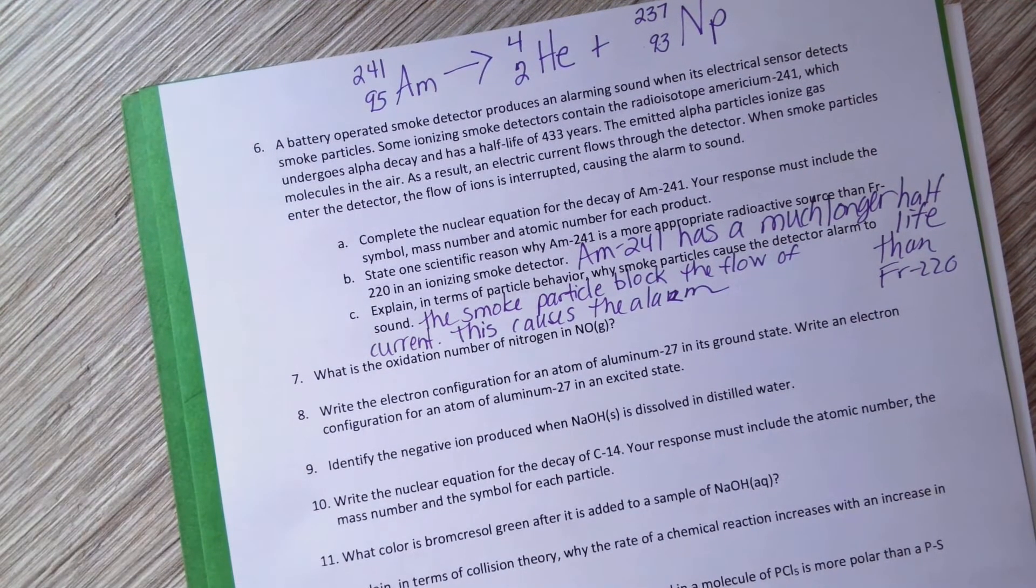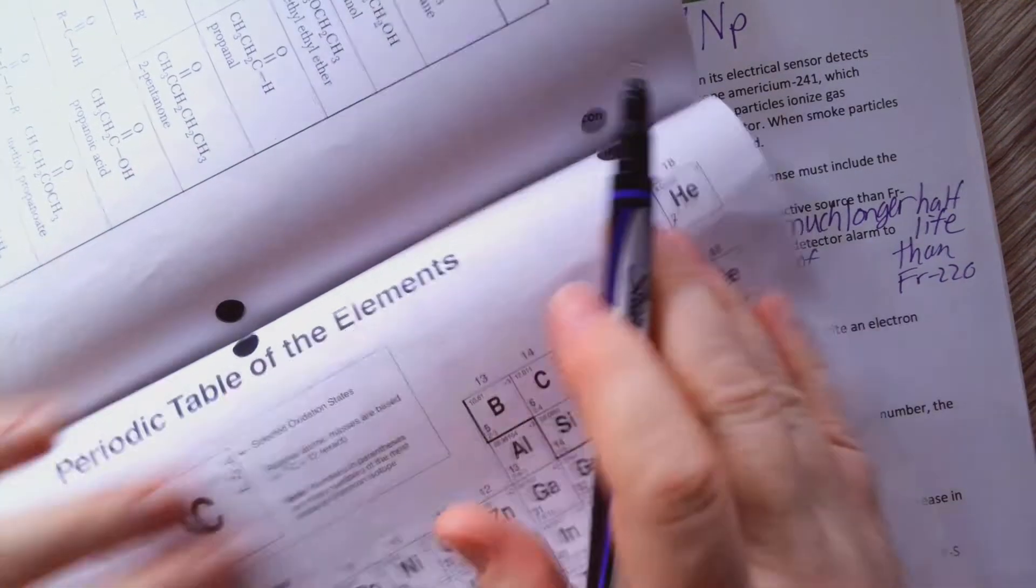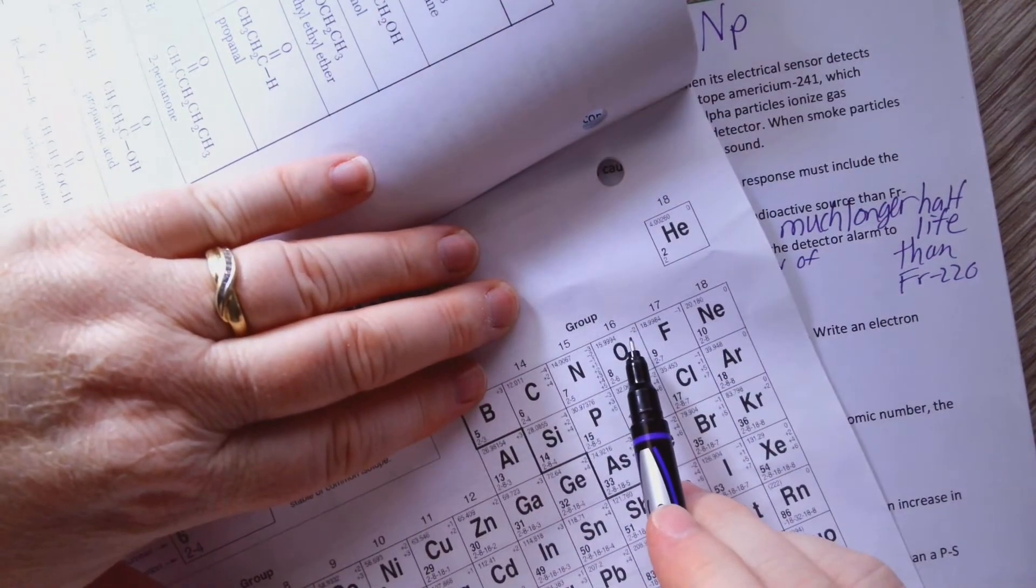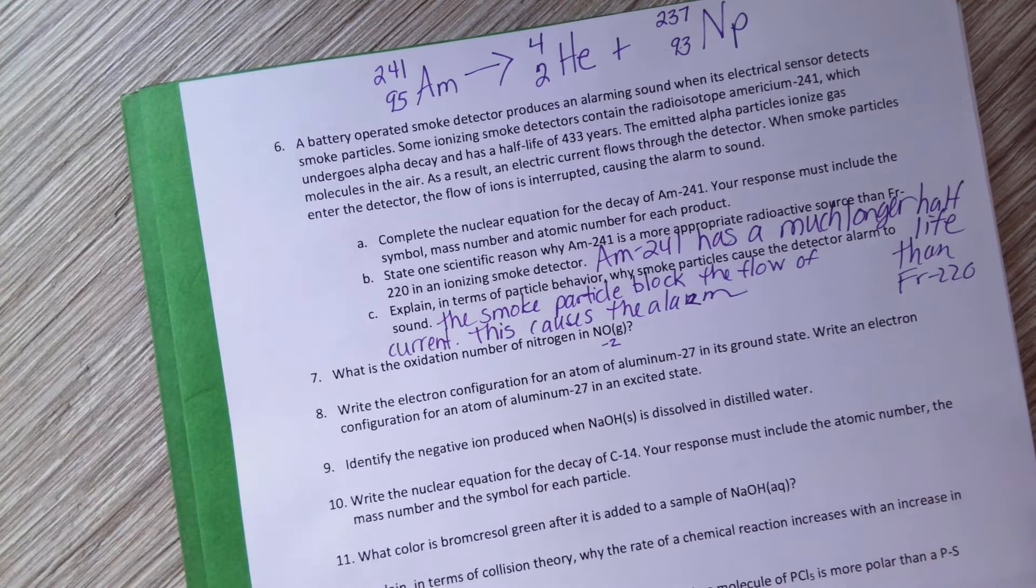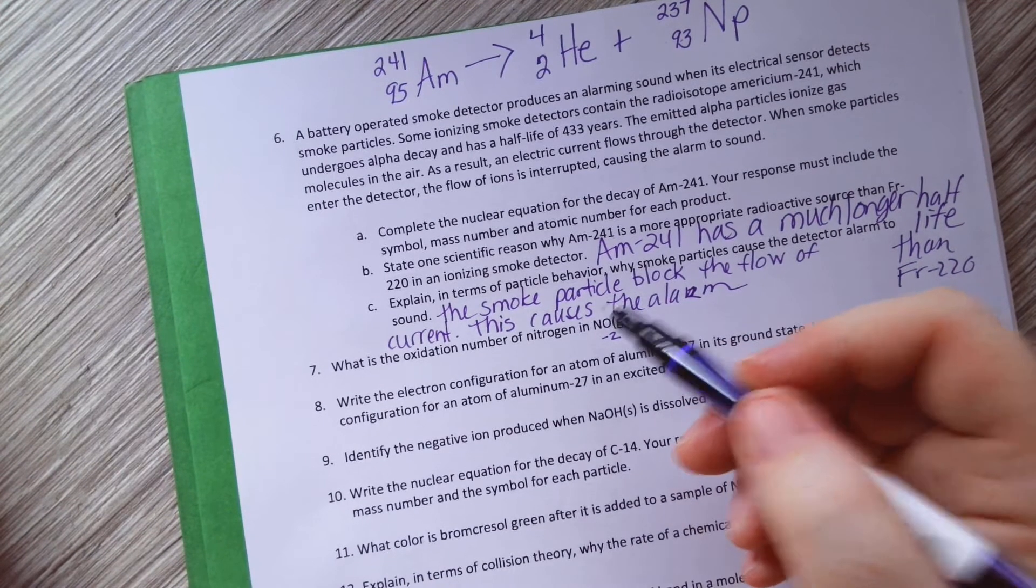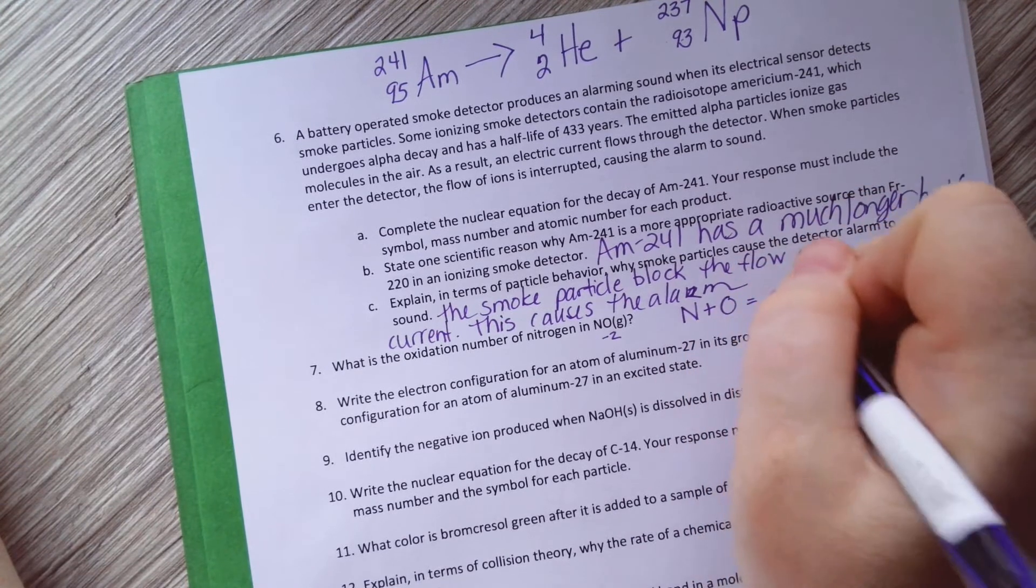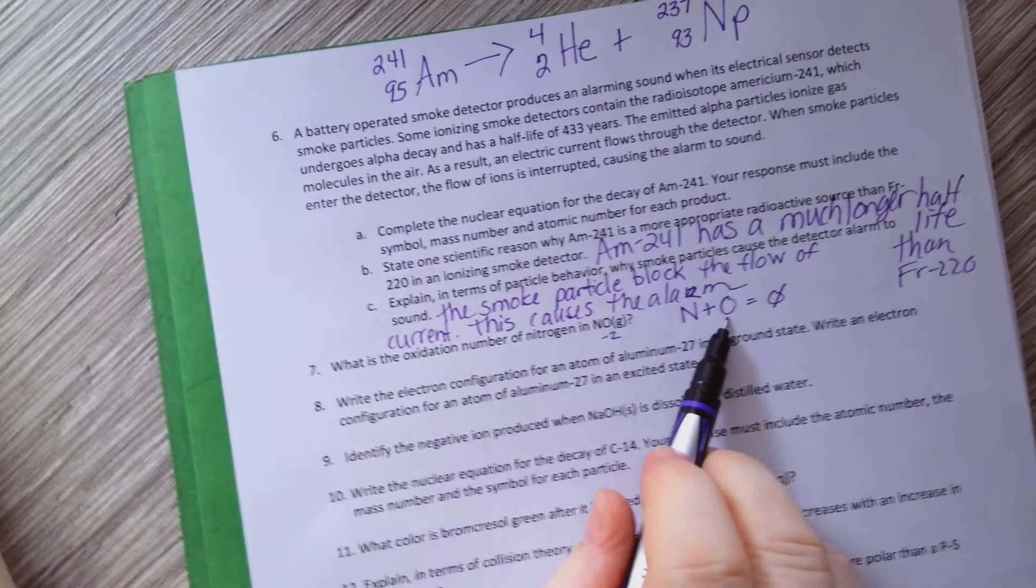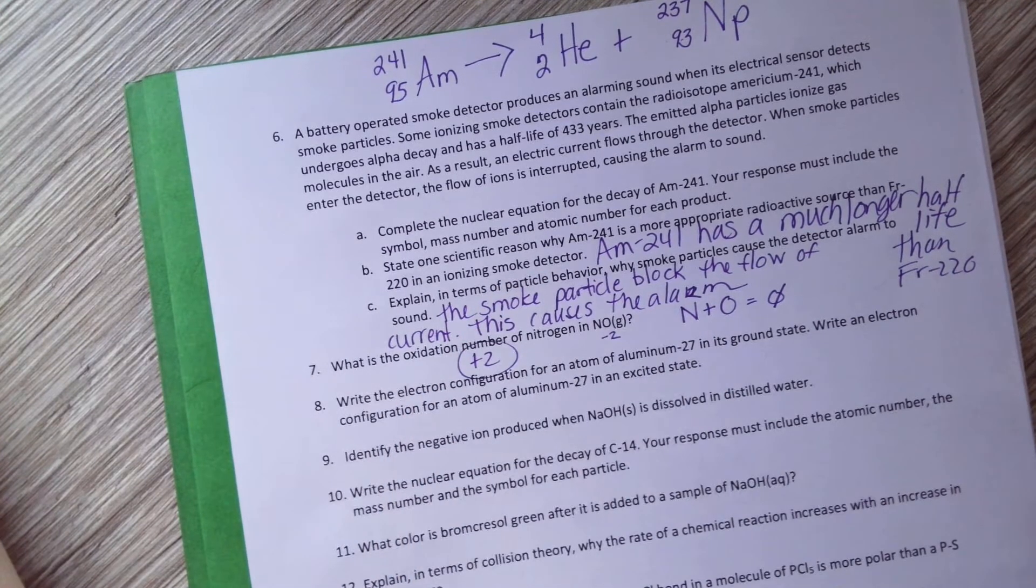What is the oxidation number of nitrogen in NO? So what is the oxidation number of oxygen? Negative 2. So if the oxidation number of oxygen is negative 2, what does nitrogen have to be? Well, positive 2.